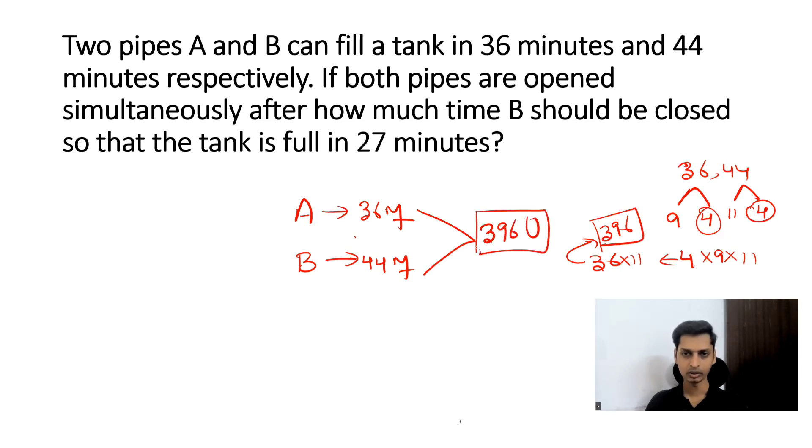So 396 units is the total capacity of the tank. Now pipe A will fill this 396 units in 36 minutes. So in one minute, pipe A will fill 396 by 36, which is 11 units. Now pipe B will fill how many units in one minute? 396 by 44, which is 9 units. So pipe B will fill 9 units per minute.